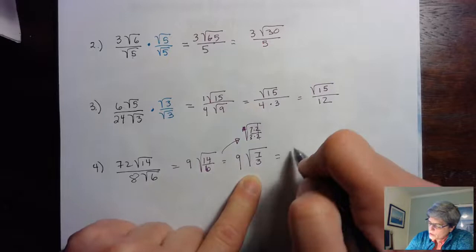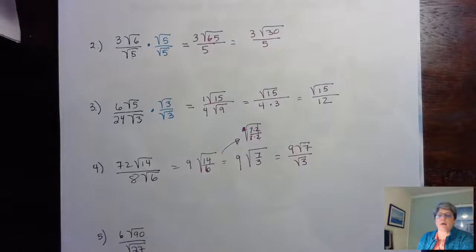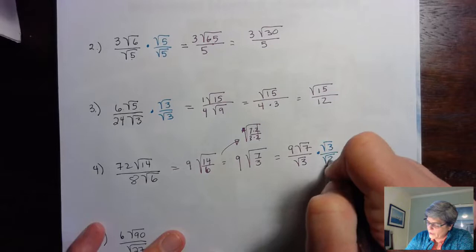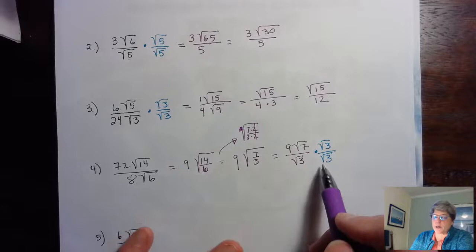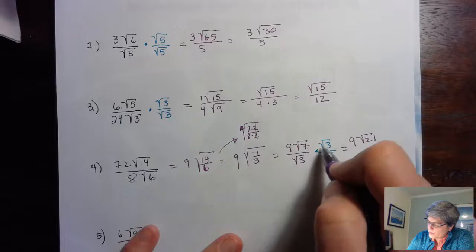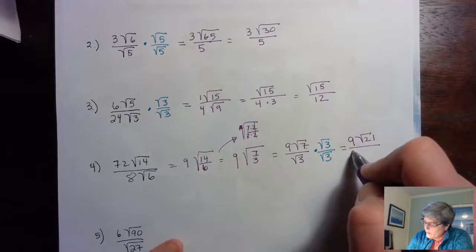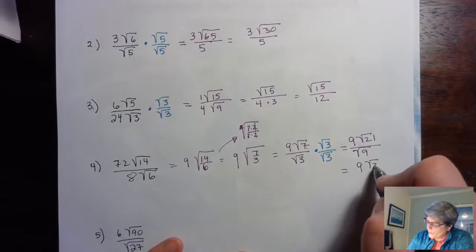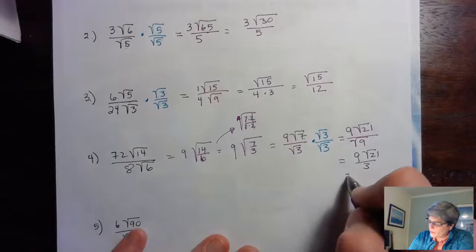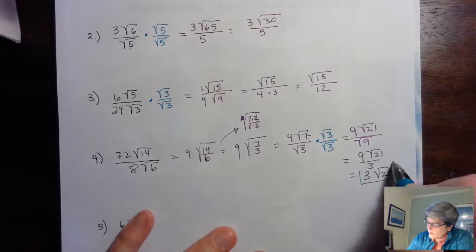We can't leave it this way, because a fraction under a square root counts as a root in the denominator. So I rewrite it as 9 root 7 over root 3, and rationalize by multiplying by root 3 over root 3. That gives 9 times the square root of 21 over the square root of 9, which is 3. So we have 9 root 21 over 3, and 9 divided by 3 is 3, giving a final answer of 3 root 21.